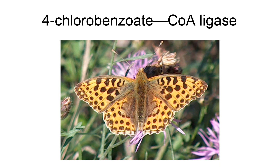This enzyme belongs to the family of ligases, specifically those forming carbon-sulfur bonds as acid-thiol ligases. The systematic name of this enzyme class is 4-chlorobenzoate CoA ligase. This enzyme participates in 2,4-dichlorobenzoate degradation.